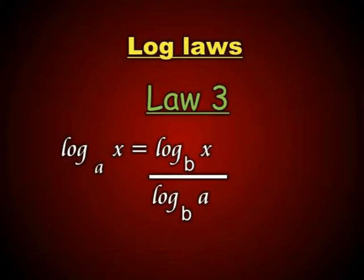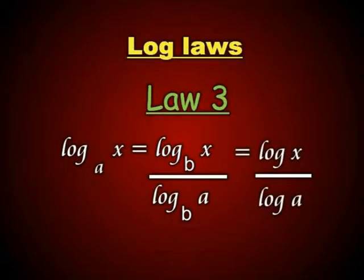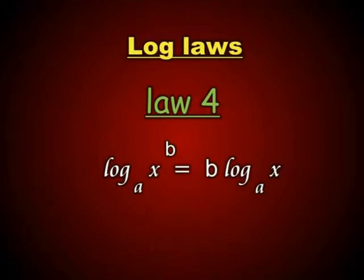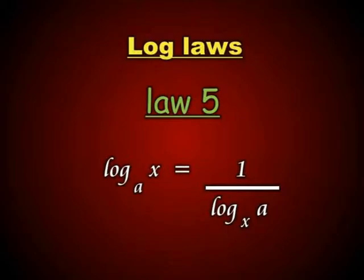Law 3: log base a of x equals log base b of x over log base b of a. That base b could be any base you want it to be. It could also be written as log x over log a, assuming a base of 10. Law 4: log base a of x to the power b equals b times log base a of x. Law 5: log base a of x equals 1 over log base x of a.